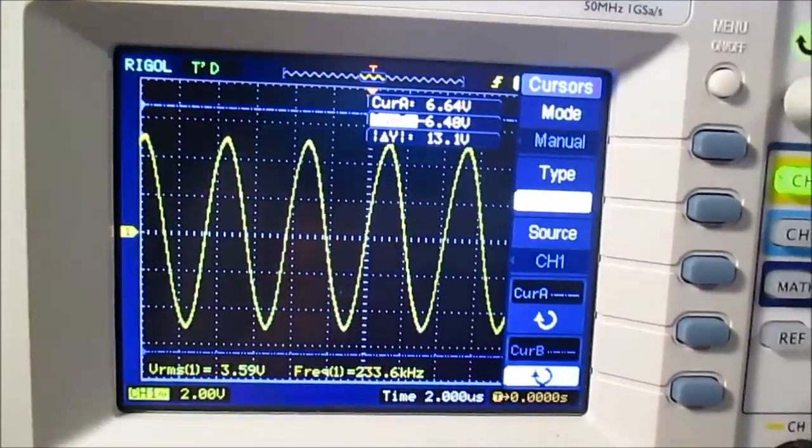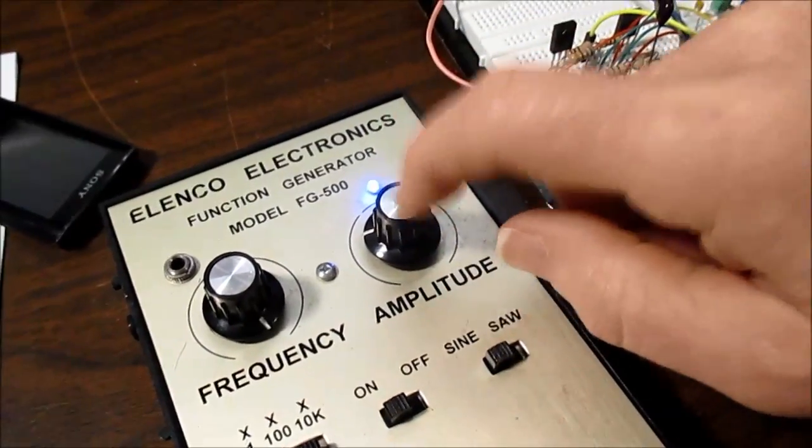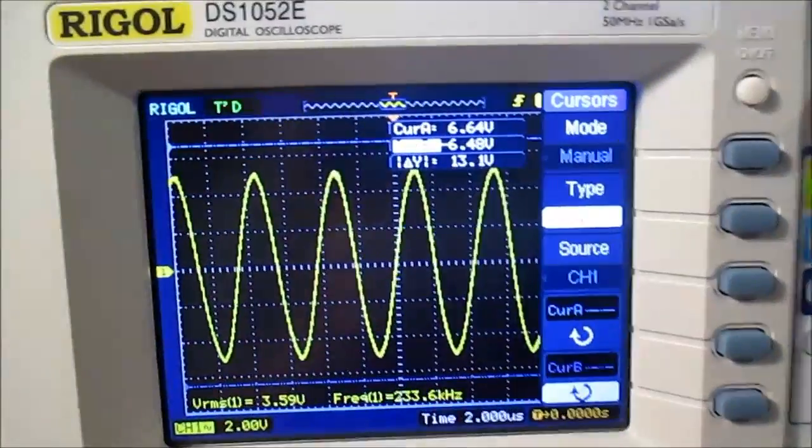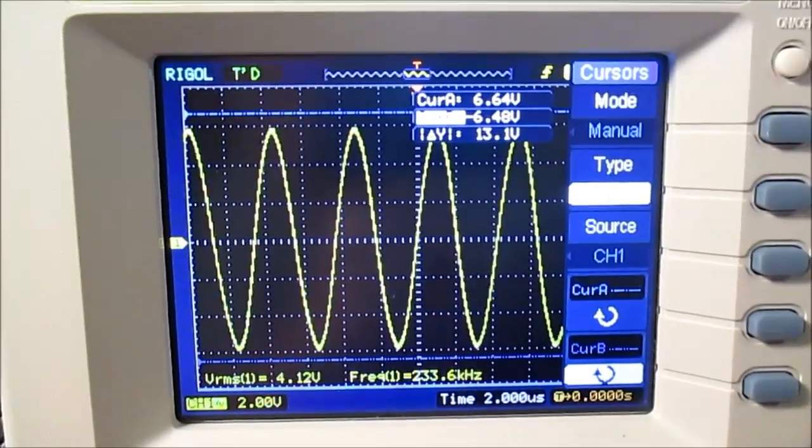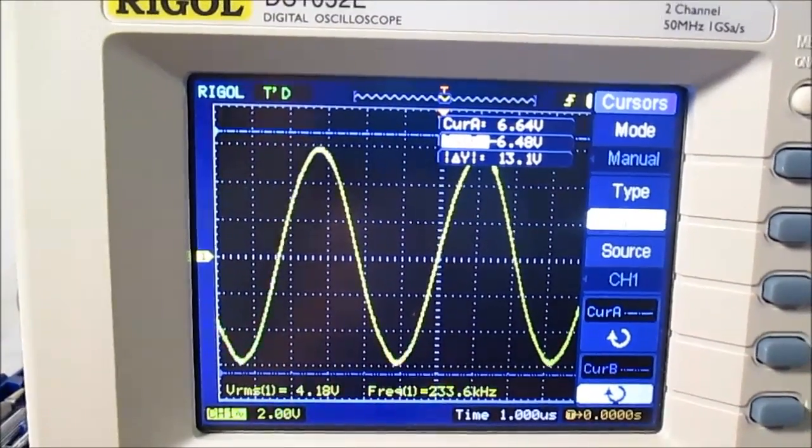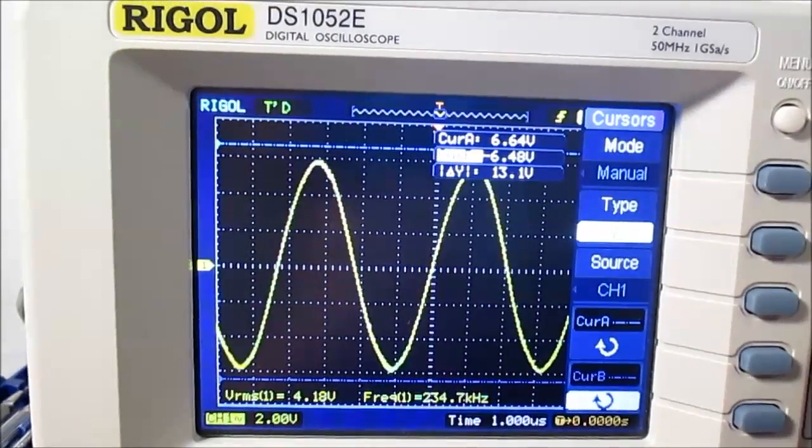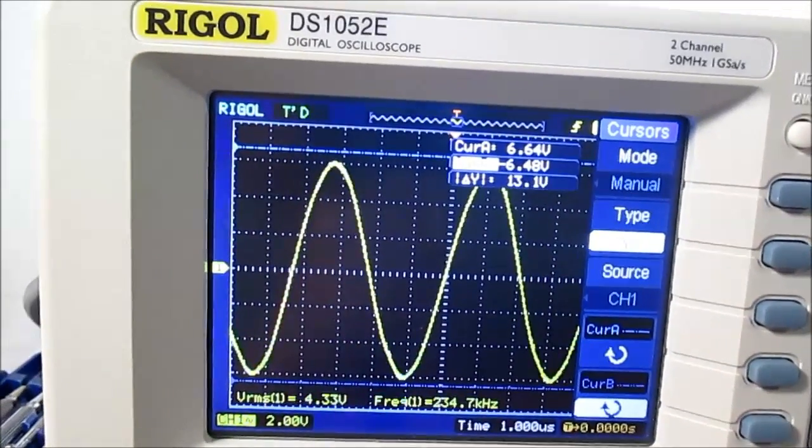Actually, you know something, this function generator rolls off at high frequencies, so I'm not sure that it is the amplifier that's rolling off. And I'm not even sure it's slew rate limited either. This amplifier, it's got a hell of a bandwidth. Yeah I need better equipment in my lab here.